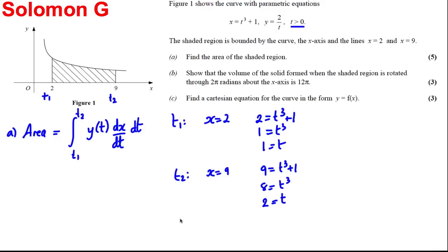Also, we know that x is equal to t cubed plus 1, so dx by dt is 3t squared. Now we have everything we need to substitute into this formula here. So the area is the integral between t1, which is 1, and t2, which is 2,